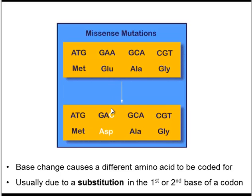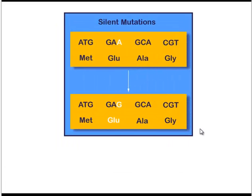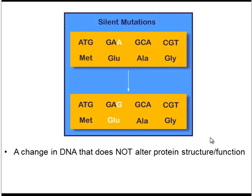But in some cases it can also be due to a substitution in the third base. Another type of point mutation is a silent mutation. One single base has been changed from an A to a G. However, both GAA and GAG ultimately code for the same amino acid. So this mutation has no effect on the cell — it doesn't change the amino acid sequence, and thus it doesn't change the protein structure or shape. That's why it's considered a silent mutation.